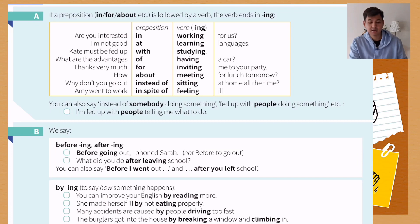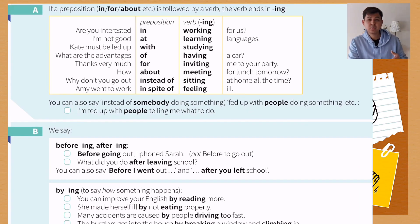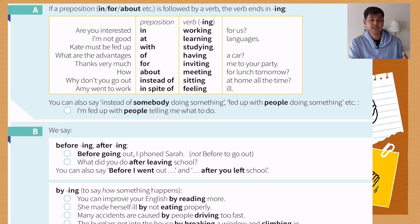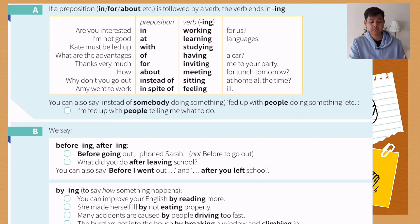'What are the advantages of having a car?' — 'to have a car' becomes 'having a car.' Then, 'Thank you very much for inviting me to your party' — we always use 'thank you for doing something,' and without realizing it, this is the grammar rule: after the preposition 'for,' we have to use the verb -ing form. 'How about meeting for lunch tomorrow?' — 'about' is also a preposition, so 'to meet' becomes 'meeting.' 'Why don't you go out instead of sitting at home all the time?' And: 'Amy went to work in spite of feeling ill' — in spite of plus verb -ing.